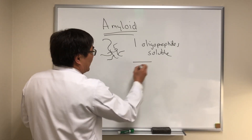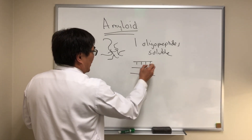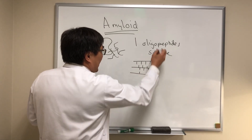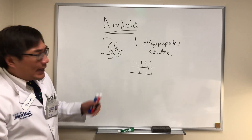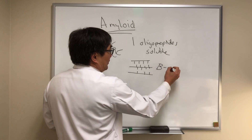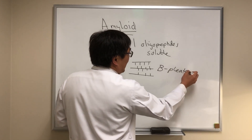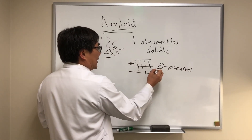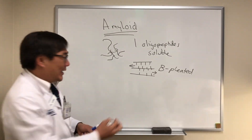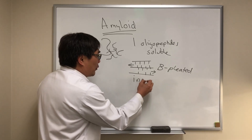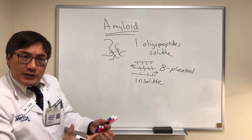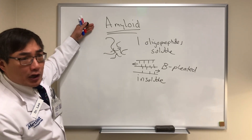However, in amyloid, the oligopeptides start to orient and have intrapeptide bonding that creates a sheet. Rather than assuming an alpha helical pattern, they assume a beta-pleated — and in this case anti-parallel — configuration that will convert the soluble oligopeptide into an insoluble substance. And once that insoluble substance appears in the tissue, that amorphous extracellular material is what we call amyloid.